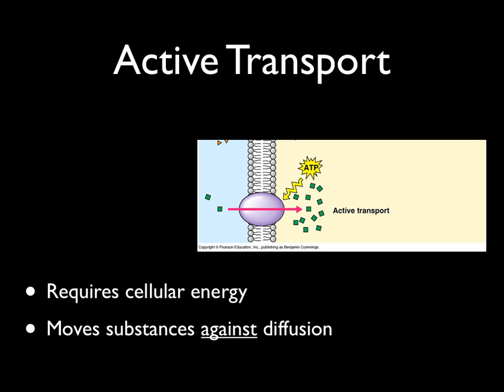Active transport requires cellular energy because the cell is going to move substances against the concentration gradient — against diffusion. In other words, active transport moves substances from low concentration to a high concentration. Consider how a cell might need food items from the outside environment. A cell is not likely to find food items in a high concentration outside, but it really needs to have a high concentration of those food items inside the cell for its metabolism to work efficiently. In order to accumulate those items inside the cell, the cell has to use energy and special proteins called transport proteins to bring those substances in.